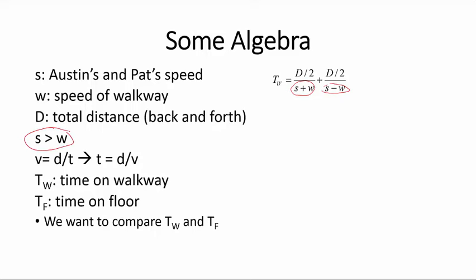If we add those two rational expressions, this is what we get, which is equal to this. We must compare that to the time on the floor, which is simply the total distance over the constant speed. How do those two quantities compare?